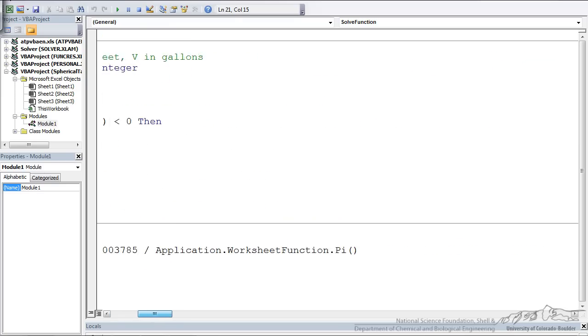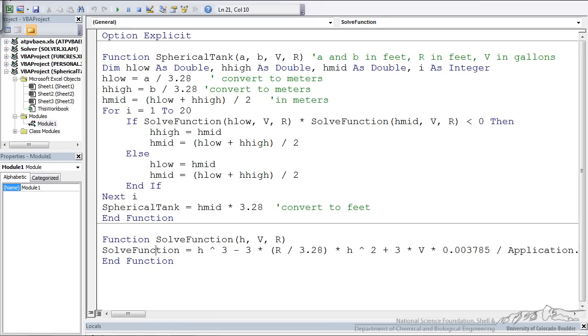If we scroll over here, you see that I've used application worksheet function pi. If that function at the low bound times the function value at the midpoint. If that product is negative, then we know that the zero has to lie somewhere in that range. And then this is where we do the conditional changes. Where we now say H high is the H midpoint.